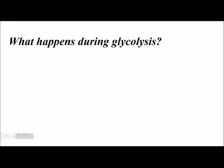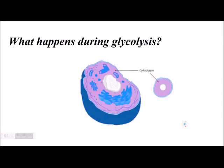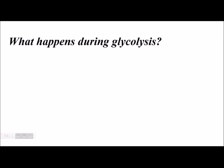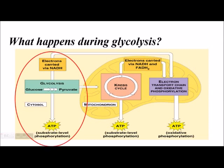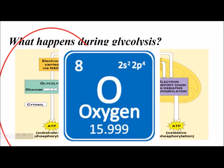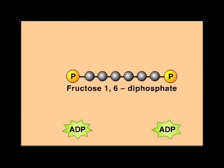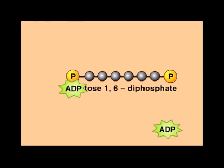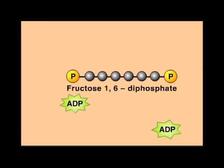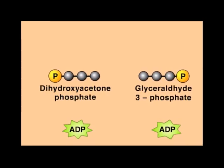Now, what happens during glycolysis? Glycolysis is the production of ATP from glucose molecules in the cytoplasm or cytosol of cells. The cytosol is the clear portion of the cytoplasm. In the diagram, we can see on the left side the first stage — glycolysis. Take note that this process does not require oxygen. First, glucose is turned into 6-carbon glucose phosphate by consuming ATP molecules in the cell. You can see this on the right side of the cytoplasm.